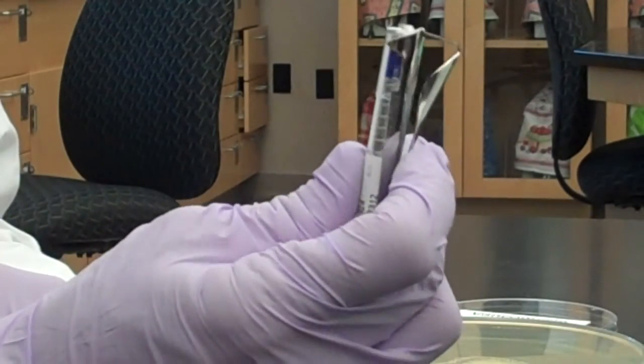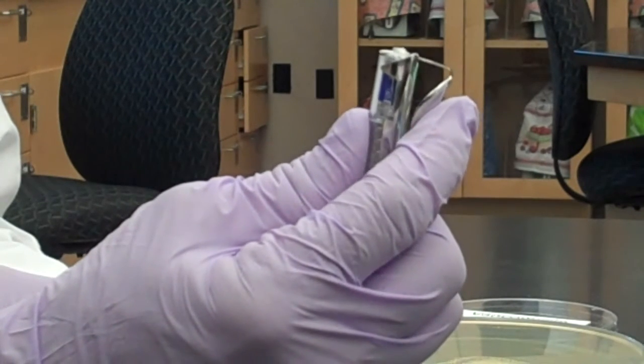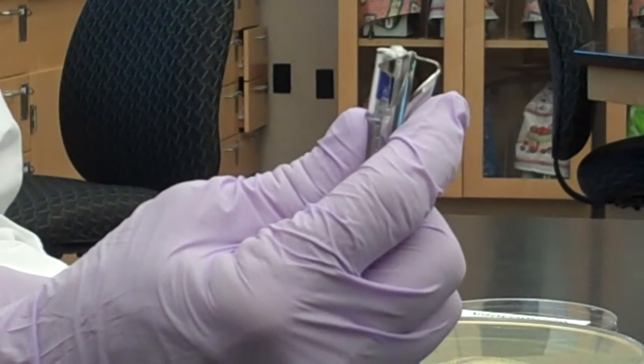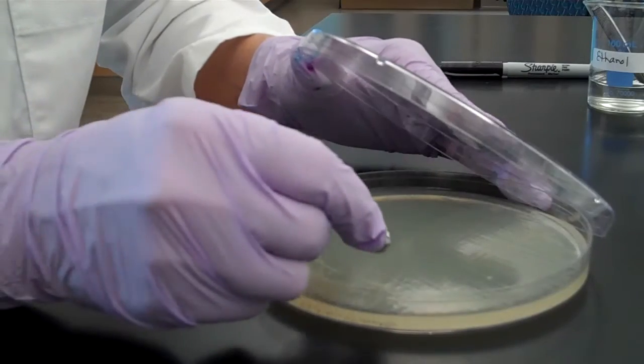The antibiotic disc dispensers kind of work like a PEZ dispenser. There's a silver plunger that will push the disc out onto the plate. Dispense an antibiotic disc from the disc dispenser.